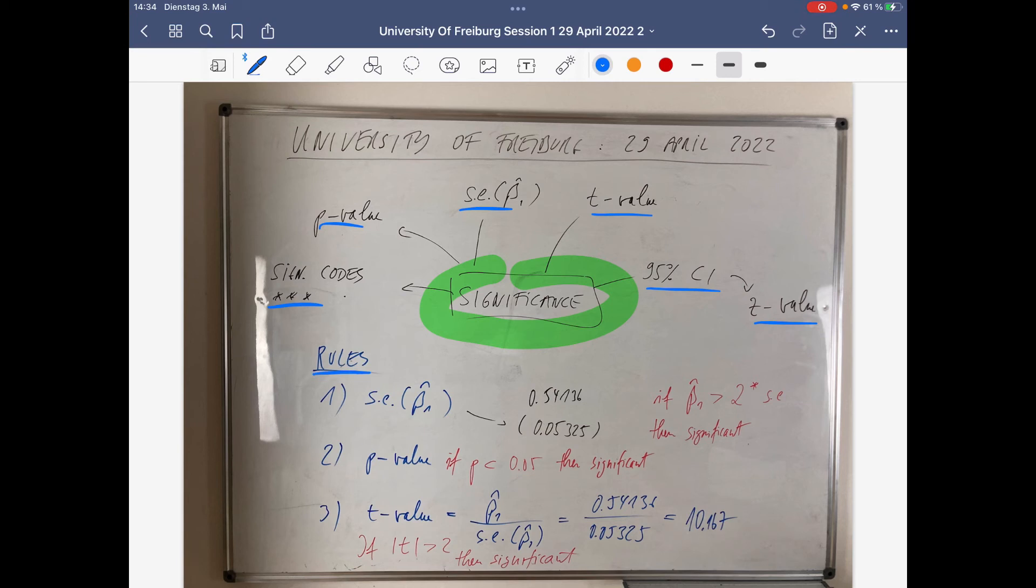Simple rules, at least in the very beginning, we work with these simple rules. Once the regression coefficient is twice the standard error, then beta 1 hat is significant. Once the p-value is below 5%, then the regression coefficient is significant.